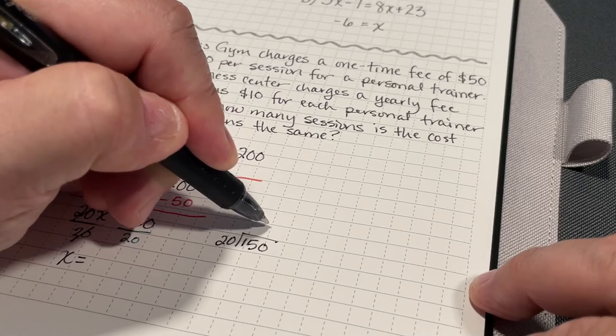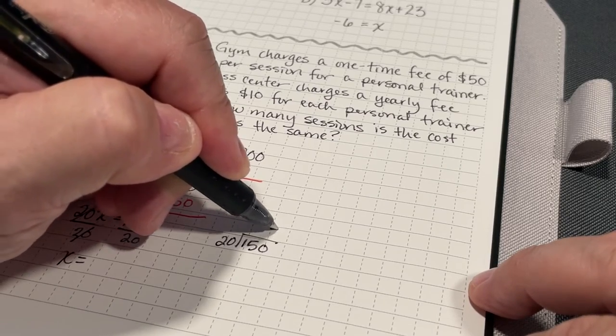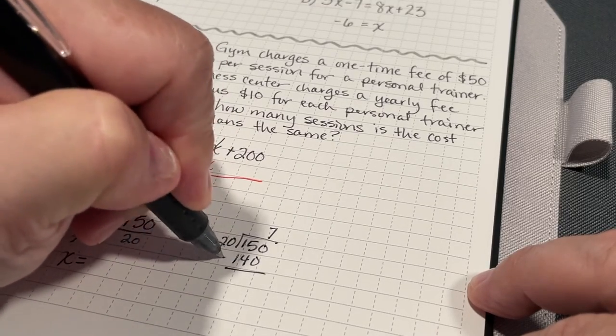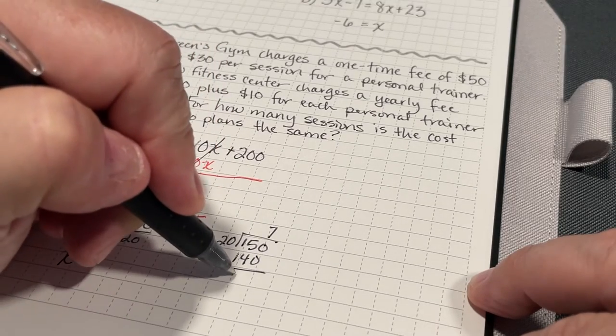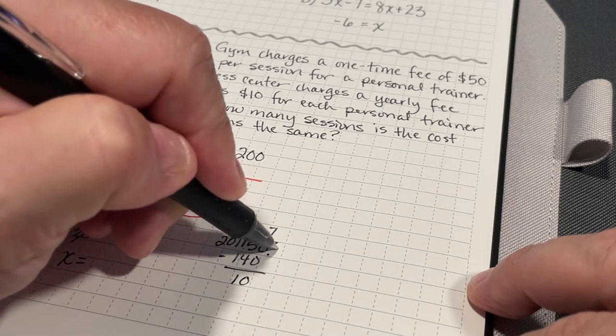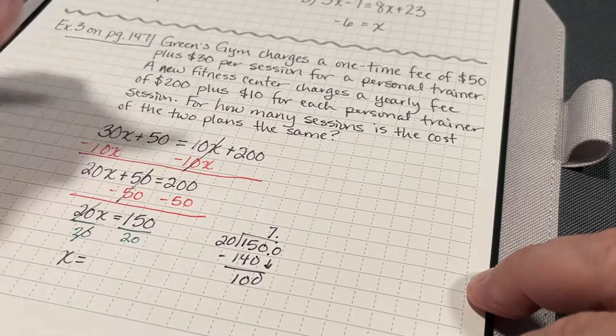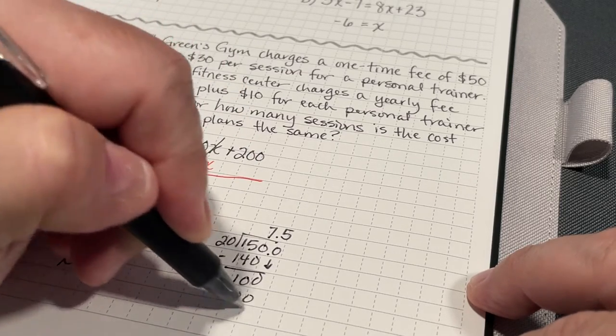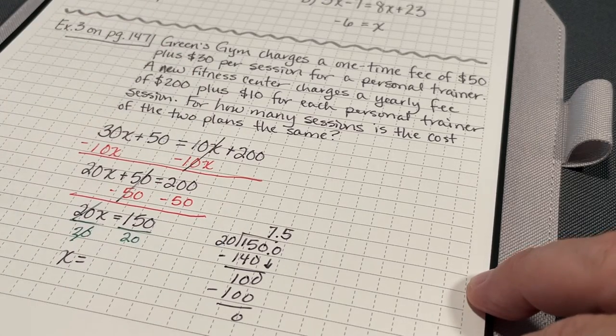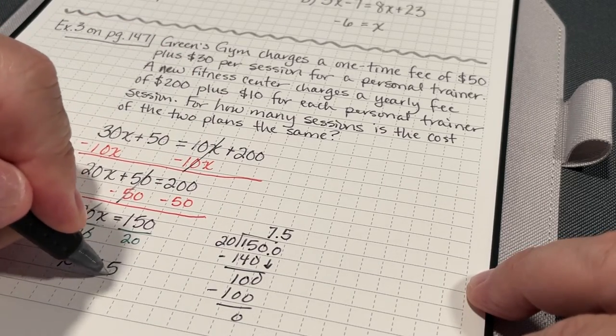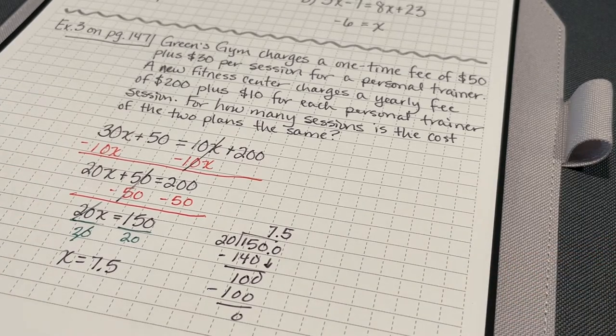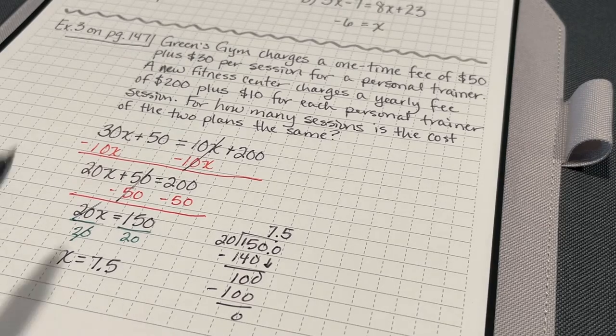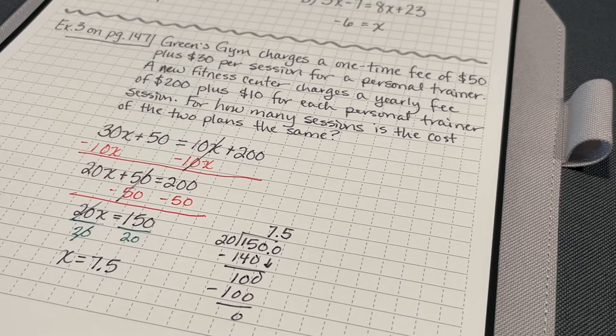Let's see. It's going to go in there almost eight times. So, 7 times. 7 times 20 is 140. And then I subtract those. I get 10. I can bring down a 0. 20 goes into 100 five times. 5 times 20 is 100. And I get that. So, I should say that at about, at exactly seven and a half of the training sessions, both gym's plans will be worth the same amount.